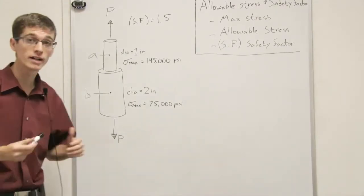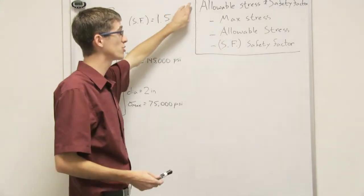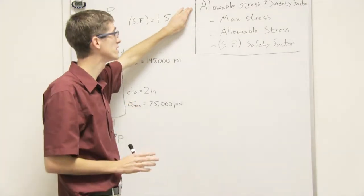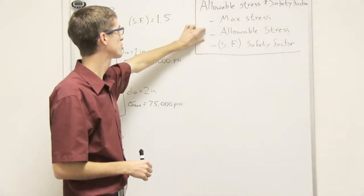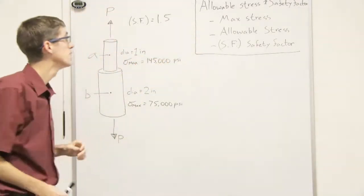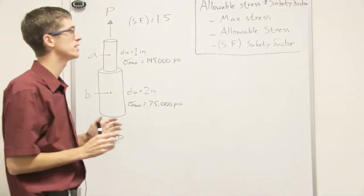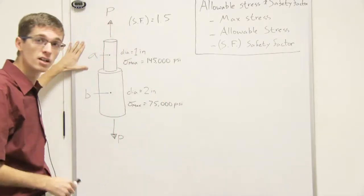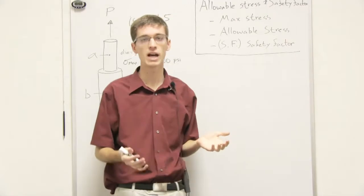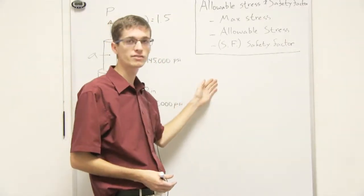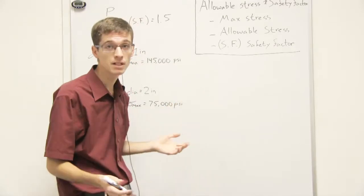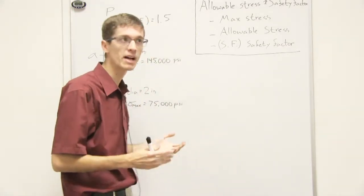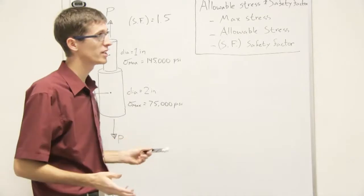What I want to look at is allowable stress and safety factor. The key things to understand are: what is maximum stress, what is allowable stress, and what is a safety factor. If you have any sort of material — a rod made out of A36 steel or anything — there's going to be a maximum stress it can hold before it yields or breaks. That is what we call the maximum stress.